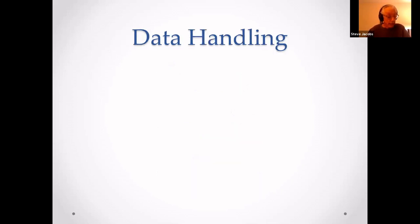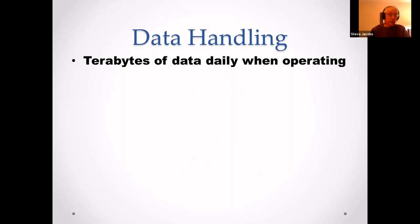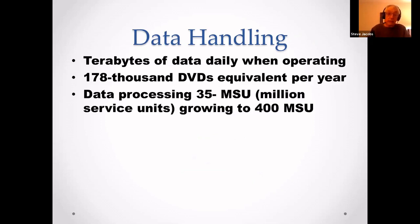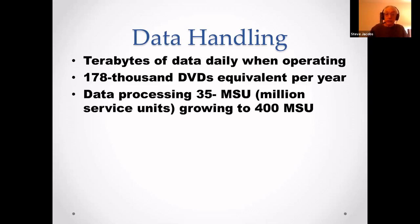For data handling, LIGO creates terabytes of data daily when operating — the equivalent of 178,000 DVDs per year of operation. Data processing has grown from 35 MSUs — million service units — to 400 MSUs. One MSU is roughly equal to 6 million mainframe instructions per second.